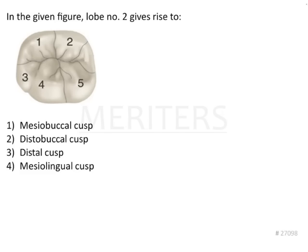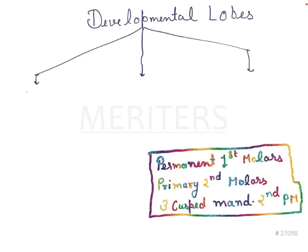In the given figure, lobe number two gives rise to — so as we all know there are certain developmental lobes which are going to give rise to different kinds of teeth. This is a very important concept which we have to understand before going ahead with this particular question. Let me give you an overview of the developmental lobes and the teeth which arise from those lobes.